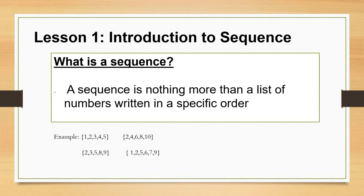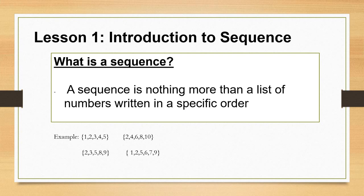As you have observed, the set of numbers 1, 2, 3, 4, 5 is written in an increasing order. At the same time, the difference between the numbers is the same, which is 1.